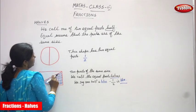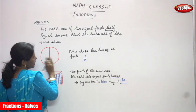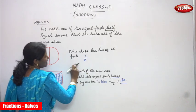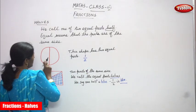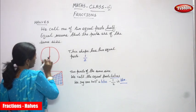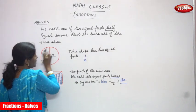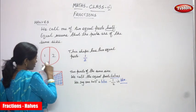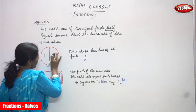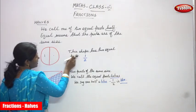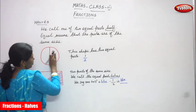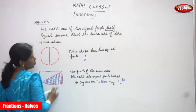So this is a circle. I cut it into two equal halves. This shape has two equal parts, that is called as 1 by 2. This is one part and this is another part. Total parts are two parts, but if I take only one part, that is called as 1 by 2.